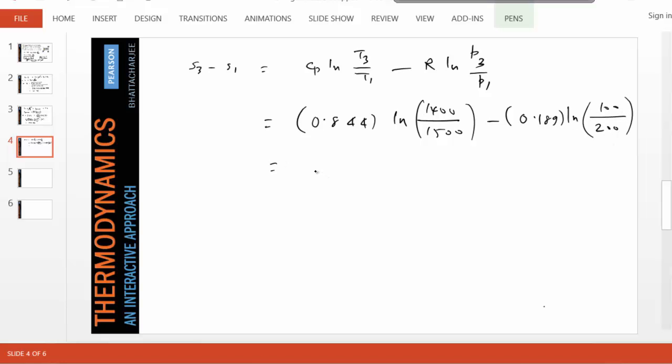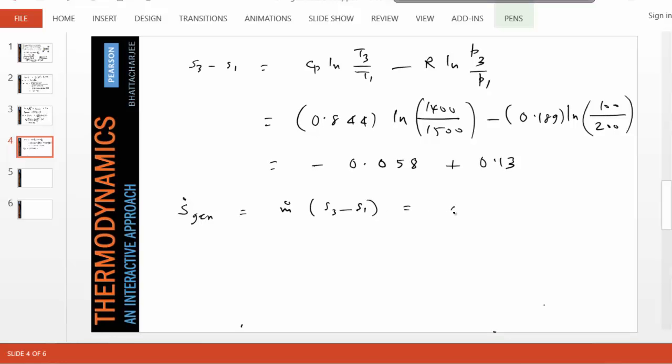And that becomes negative 0.058 plus 0.13. So substituting these, S dot gen equals M dot times S3 minus S1, which becomes 0.0113 kW per kelvin. So there we have it. We found the entropy generation rate in the system.